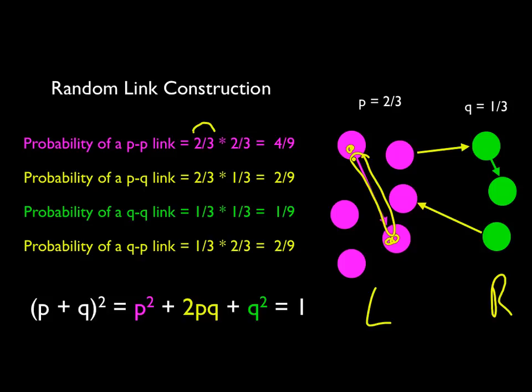The likelihood of just randomly throwing a dart and hitting one of these is two-thirds. Now, the likelihood that the second dart we throw also hits a purple one is also two-thirds. So the likelihood that we're going to form a link, a purple-to-purple link, is two-thirds times two-thirds, or four-ninths.